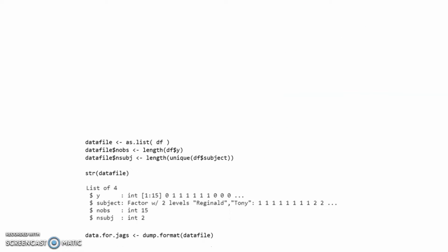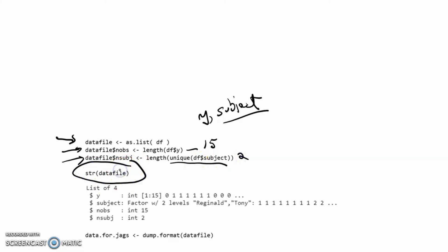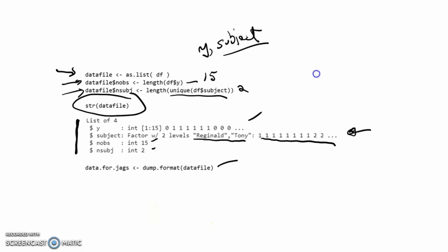We've got to think about our data file. Initially, this data file had only those two variables, y and subject. What you're going to see in your notes is that we take subject that initially was a character, and we convert it into being a factor. We're also going to have to create these two new variables: the length is going to be 15 because that's the number of observations, and the unique number of subjects is going to be 2. We can look at the list that we've created, and we can see that it's got these four different items: y, subject. Reginald and Tony that initially would have been characters are now stored as 1s and 2s. Then we create the data for JAGS in a format that JAGS will understand.